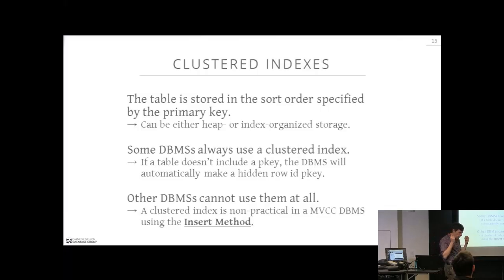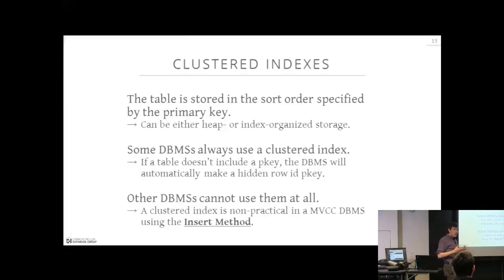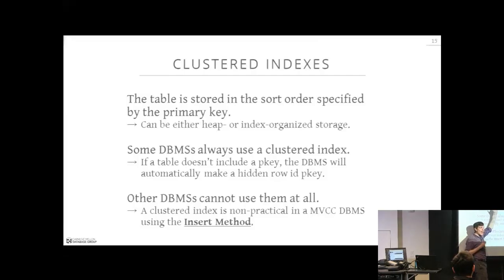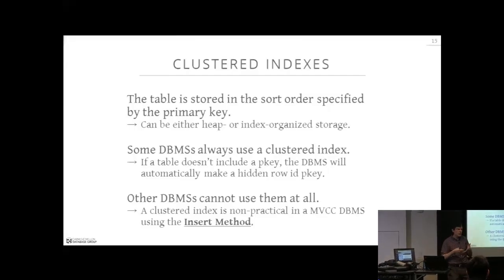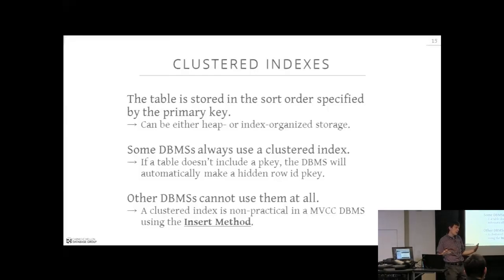A clustered index is not the same as an index-organized table. A clustered index tells the database system to sort the table on a particular attribute like the primary key, enabling optimizations like binary search without a full sequential scan. You can use a clustered index on either a heap or an index-organized table. MySQL always uses clustered indexes — whatever you set as the primary key defines the clustered index, and tuples are stored in B+ tree leaves. Oracle lets you choose between heap-organized and index-organized tables.